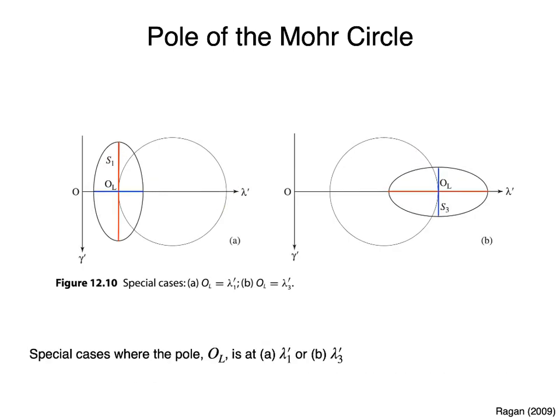There are two special cases. In figure A, the long axis of the ellipse is vertical and the short axis is horizontal; the pole is at lambda prime 1. In figure B, the long axis of the ellipse is horizontal and the short axis is vertical; the pole is at lambda prime 3.